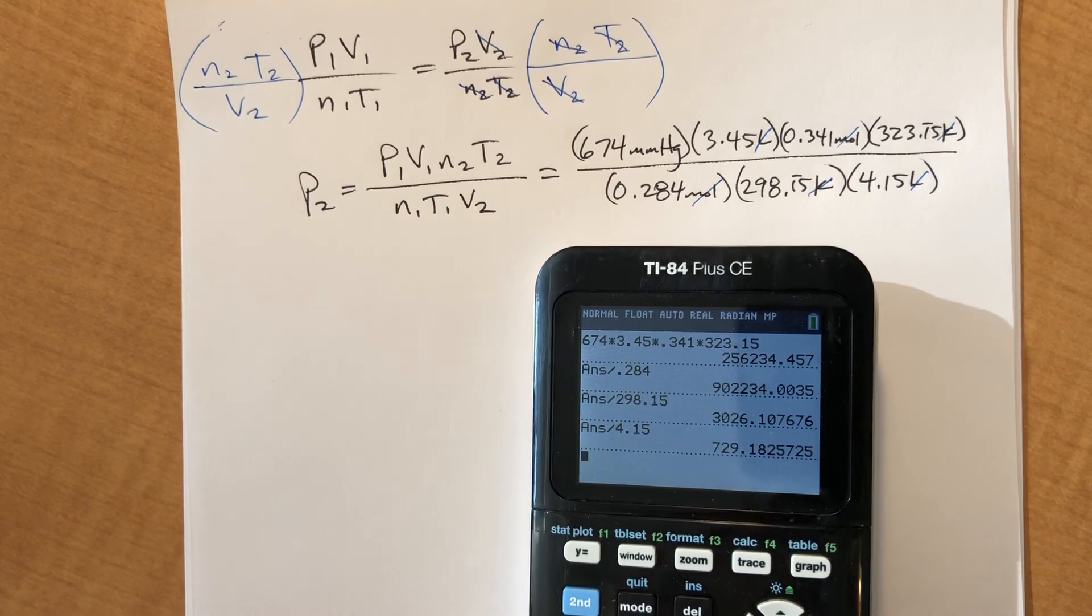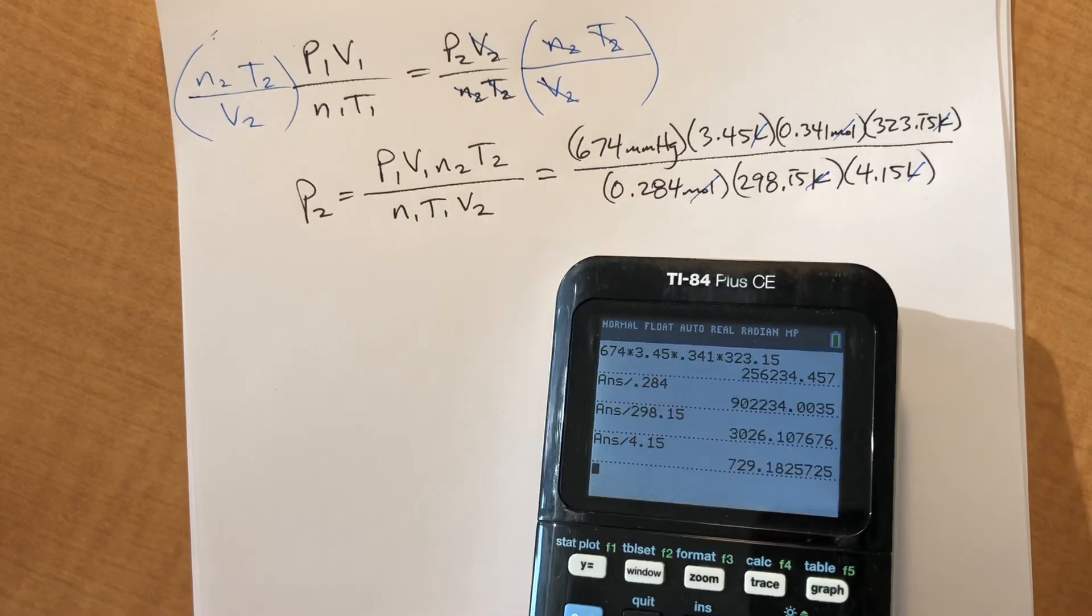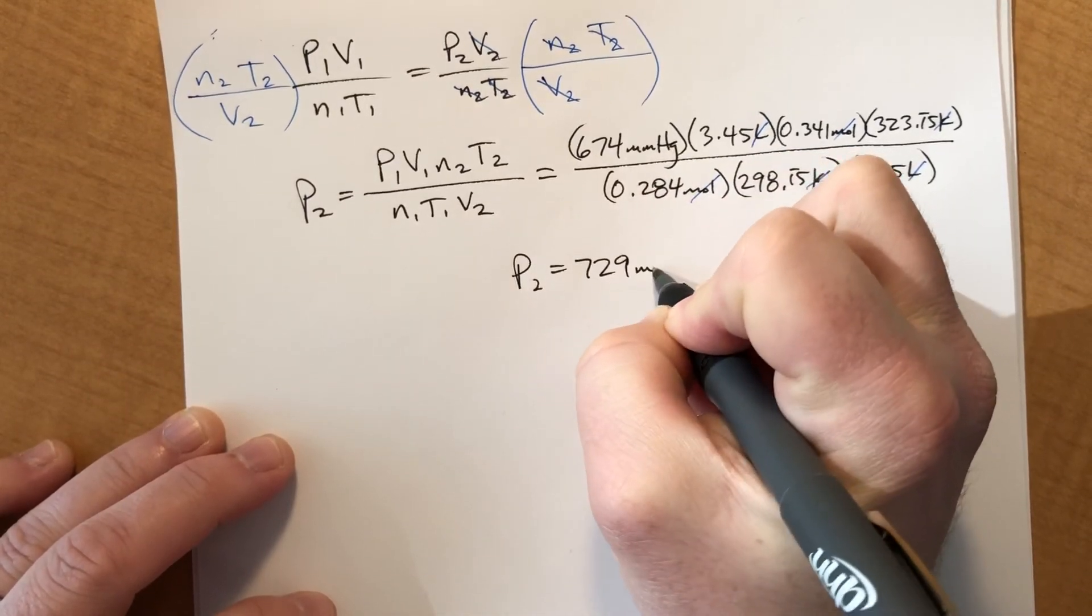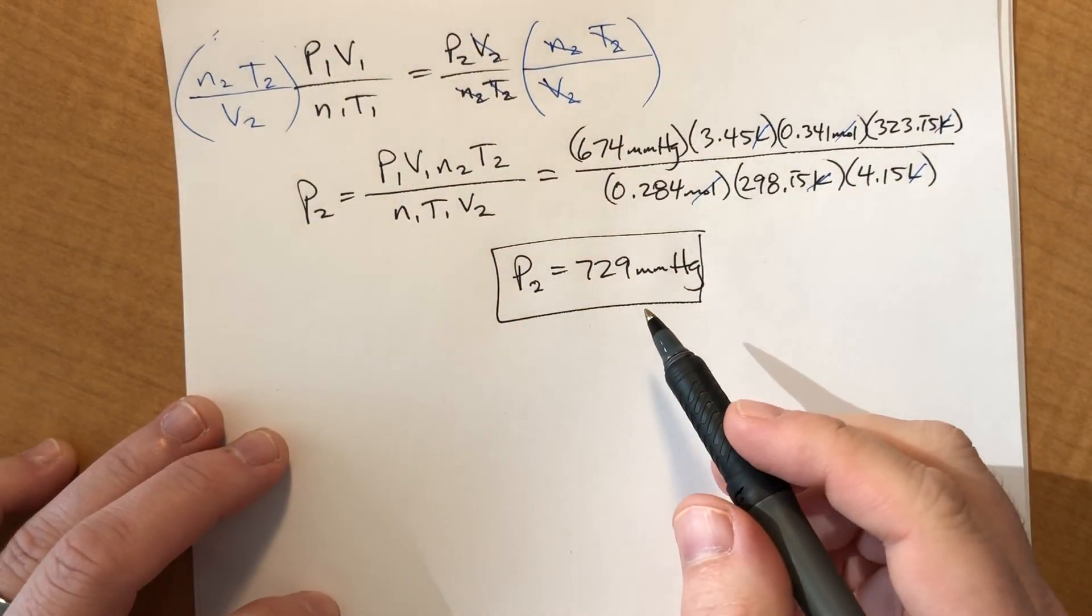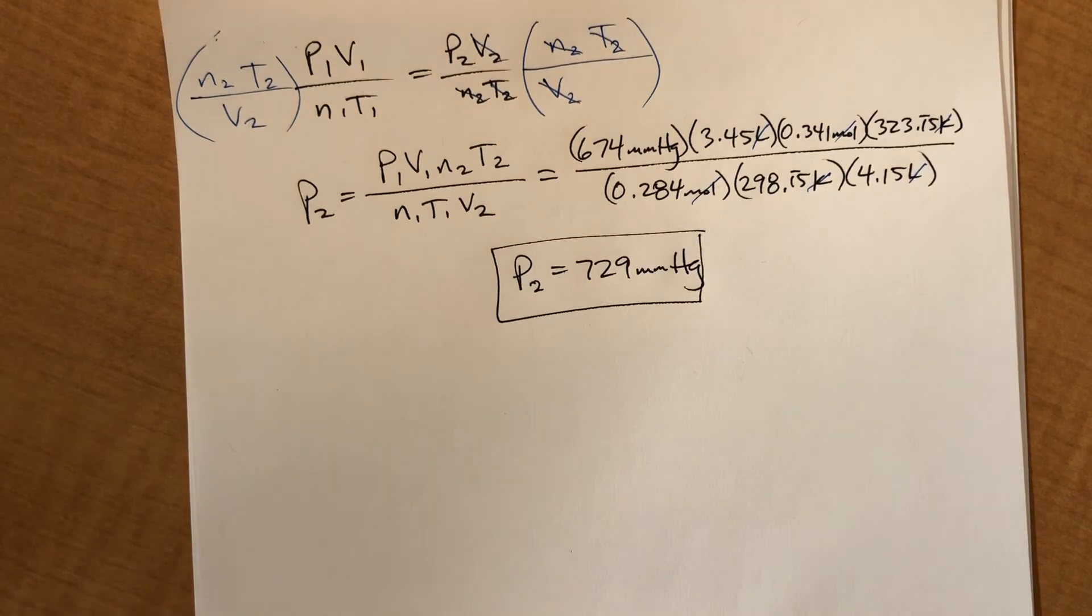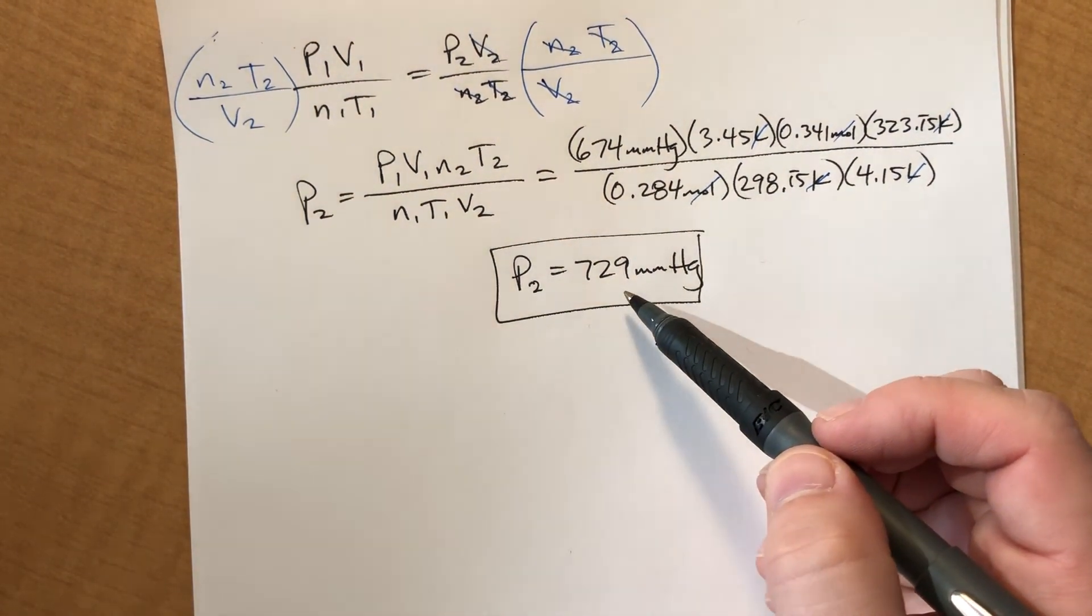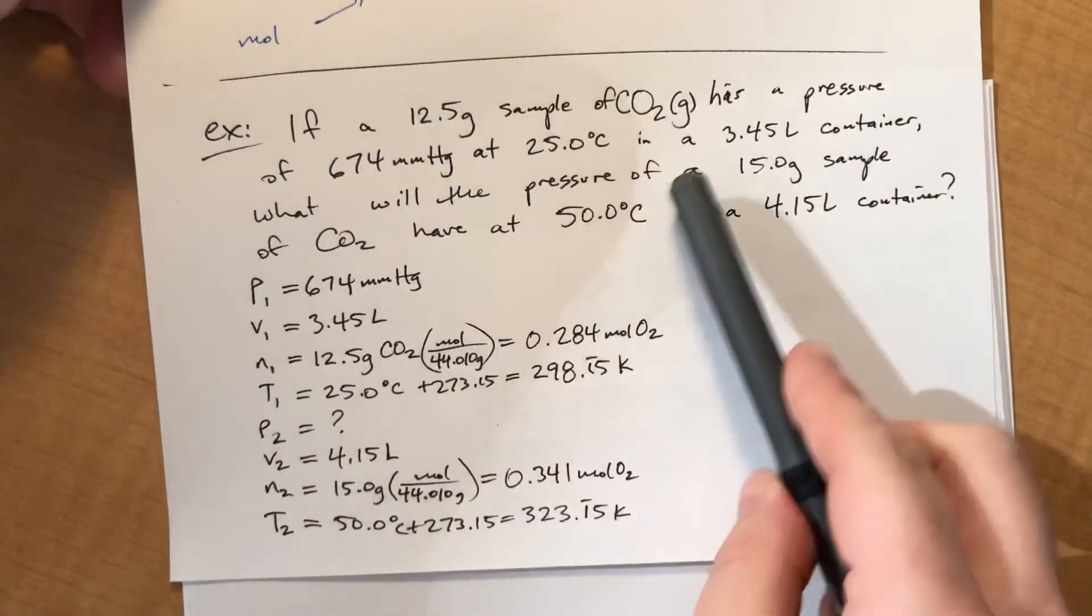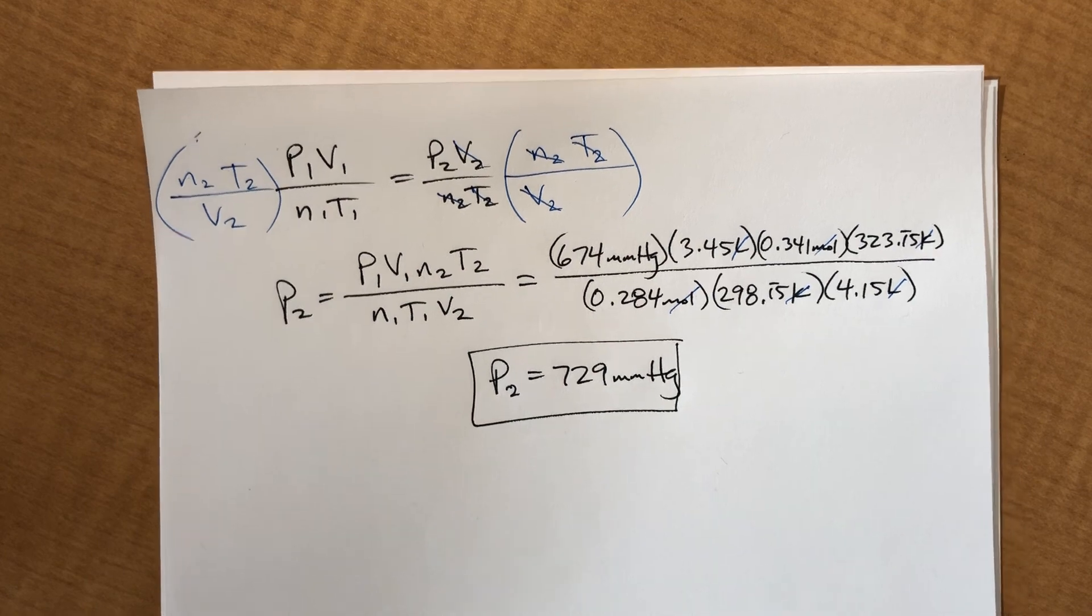And I get 729 sig figs, everything's got 3 for the most part, so 3 sig figs, 729 millimeters of mercury. Which, honestly, isn't that high of a pressure. We said that typical atmospheric pressure, that 760 millimeters of mercury is typical breathing atmosphere. This is lower than typical breathing atmospheric pressure. But the idea is, we had initial and final conditions, and this equation worked for pretty much any set of initial and final conditions. Alright, thanks.